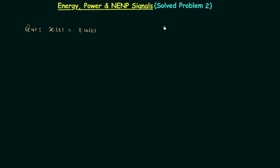In the last lecture we saw how to find out if the given signal is an energy signal, power signal, or NENP signal, explained by two different methods. Now in this lecture we will solve problem number two. The signal is x(t) = t·u(t). Again I will explain it by two different methods.